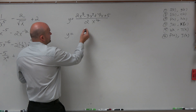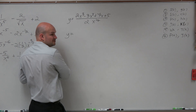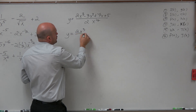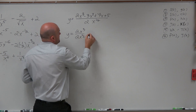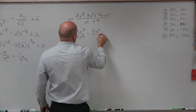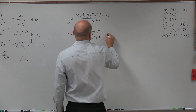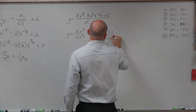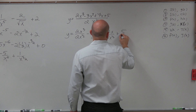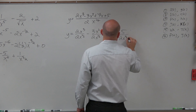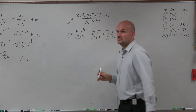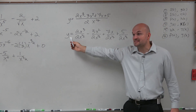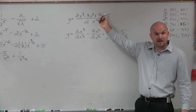Now the other thing I want to do is distribute this to every single term. So this becomes 2x cubed over 2x to the one half, minus 3x squared over 2x to the one half, plus 7x over 2x to the one half, plus 5 over 2x to the one half. Because if you were to add and subtract all these fractions, you keep the common denominator and just add and subtract the numerators.